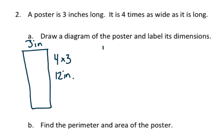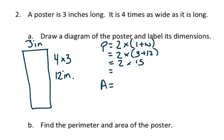To find the perimeter and the area, we're going to start with the perimeter. The formula is 2 times the length plus width, which is 2 times 3 plus 12, 2 times 15. So the perimeter is 30 inches.